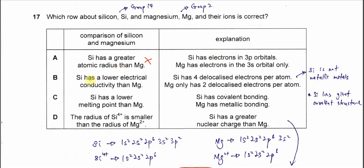B. Silicon has a lower electrical conductivity than magnesium. This is true. Let's look at the explanation.